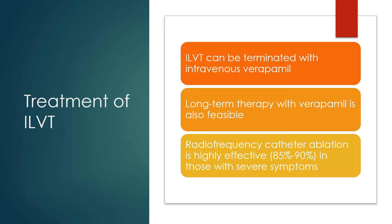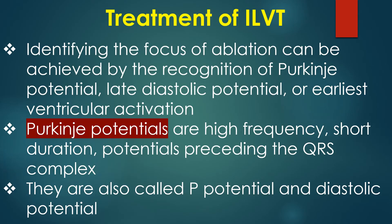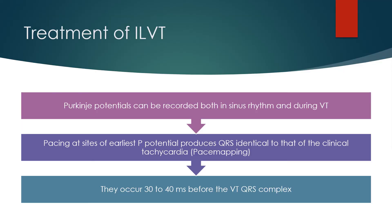ILVT can be terminated with intravenous verapamil, and long-term therapy with verapamil is also feasible. Radiofrequency catheter ablation is highly effective in those with severe symptoms. Identifying the focus of ablation can be achieved by the recognition of Purkinje potential, late diastolic potential, or earliest ventricular activation. Purkinje potentials are high-frequency, short-duration potentials preceding the QRS complex, also called P potential and diastolic potential. They can be recorded both in sinus rhythm and during VT.